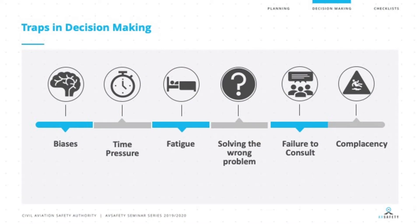So what are some of the traps to decision-making? First of all, bias. There are many different types of bias, and one that comes to mind is the halo effect. The halo effect can be described as putting someone up on a pedestal because of their experience or who they are as an individual.